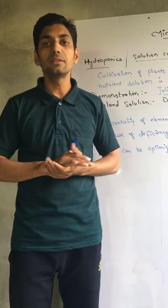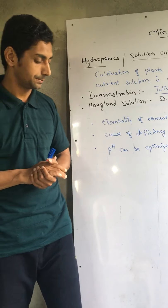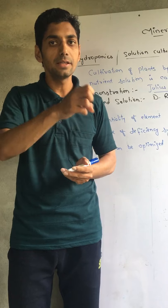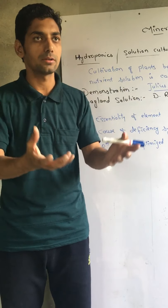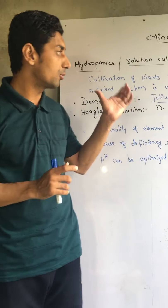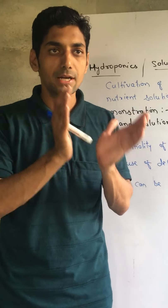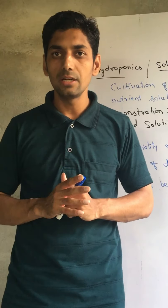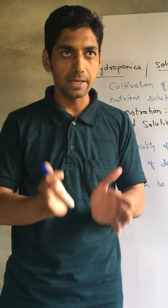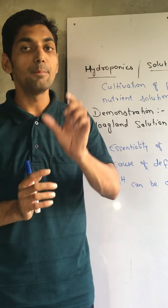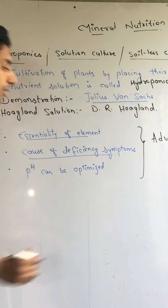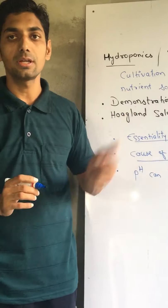Now, what do we do in the hydroponics technique? When we grow a plant in soil, there are already a number of elements available. The plant absorbs minerals through its roots and grows. But it is hard to identify which particular element could be deficient. That is why we use hydroponics — we make nutrients available in liquid or solution format in a container. The main aim is to identify the essentiality of an element and to find out the cause of deficiency symptoms.